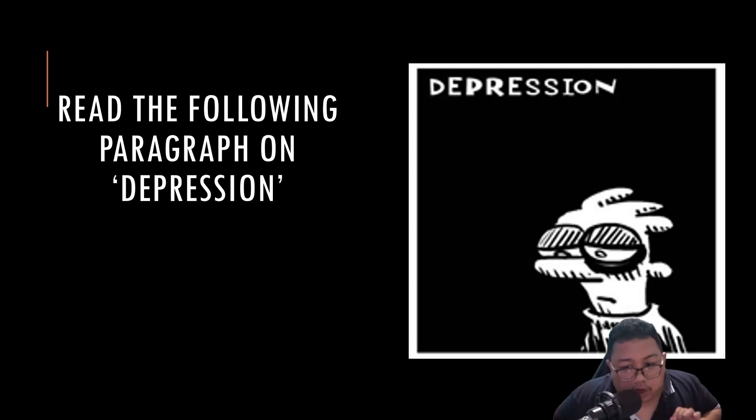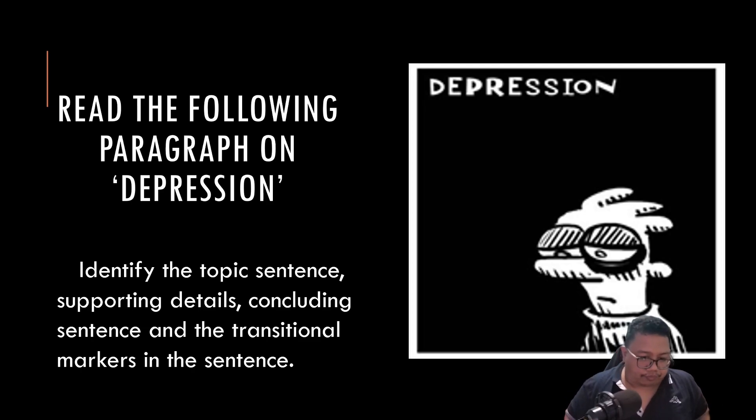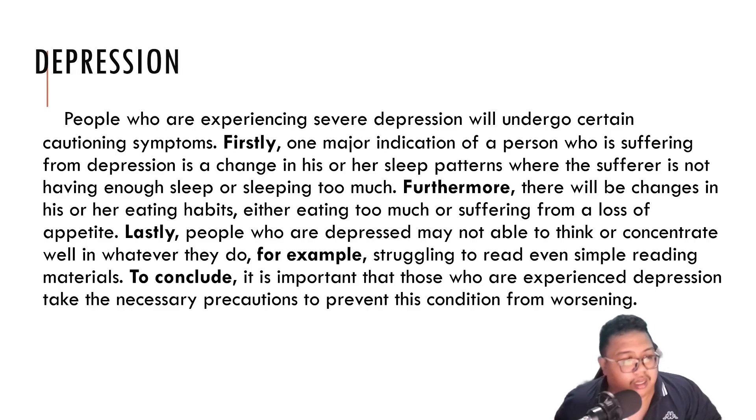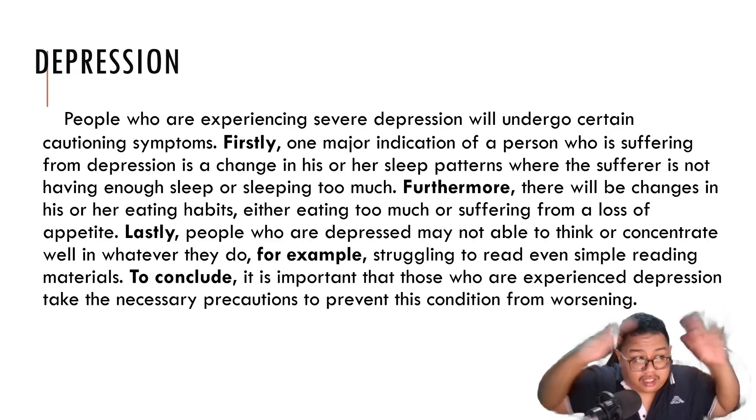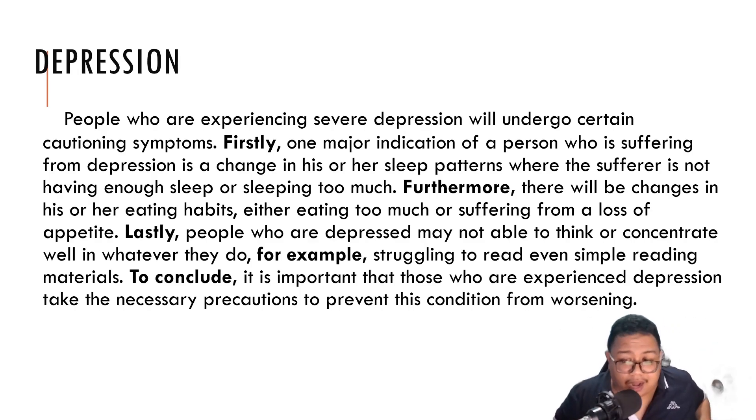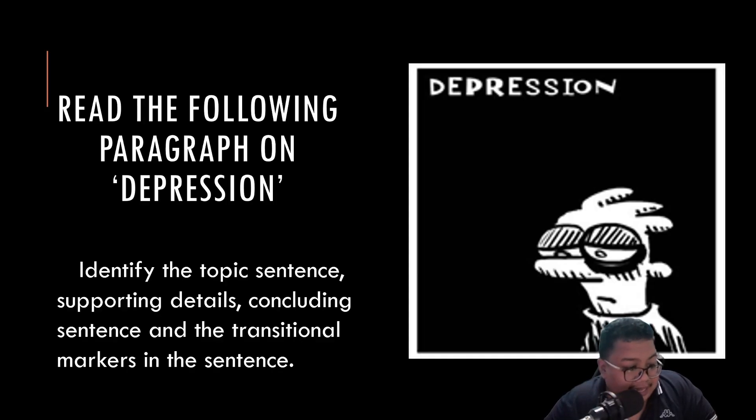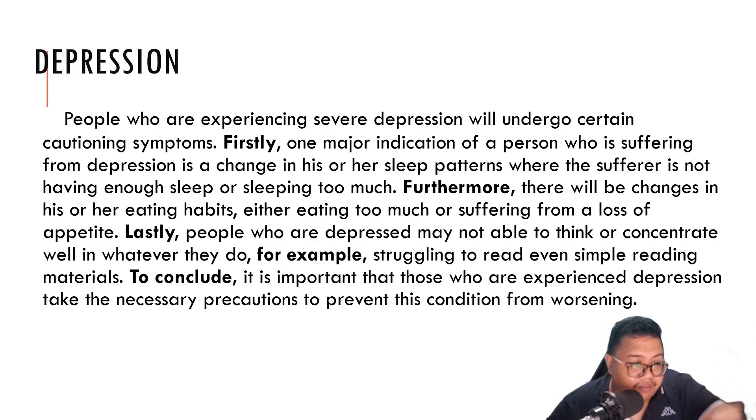So there is a paragraph here. Some sort of task here. So you need to identify topic sentence, supporting details, concluding sentence, and the transitional markers in the sentence. I want you to find out the topic sentence, the supporting details, what supporting details has been used, the concluding sentence, the transitional markers that are available, what kind of transitional markers are there.